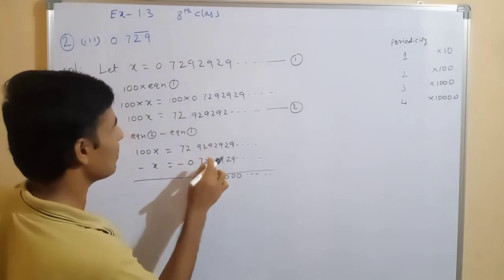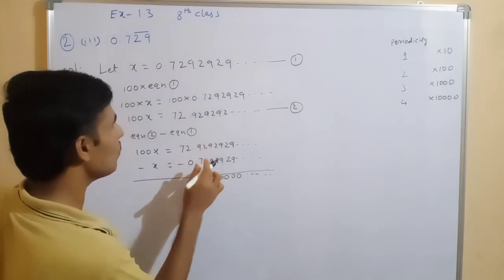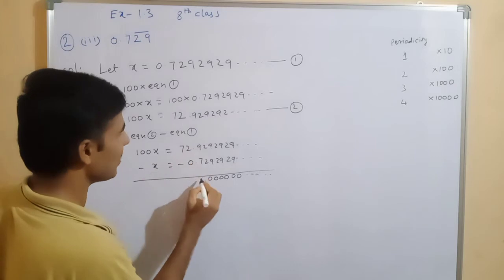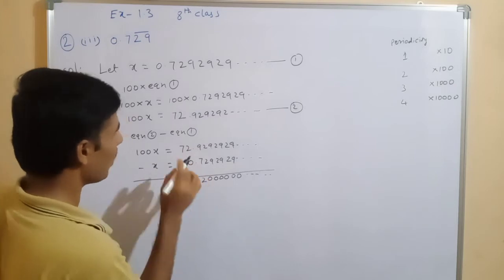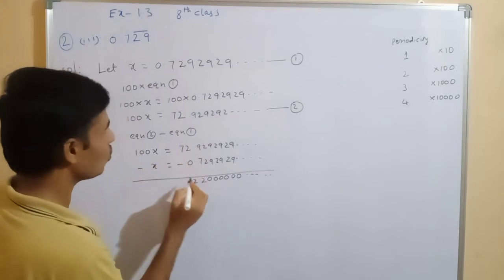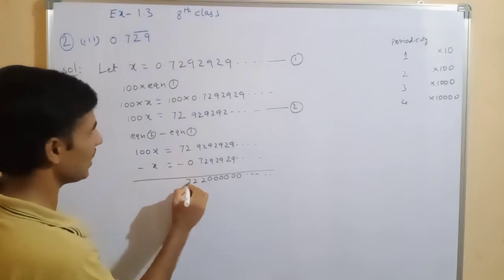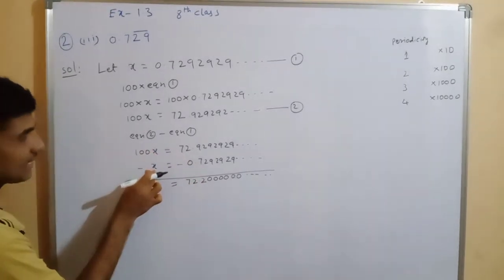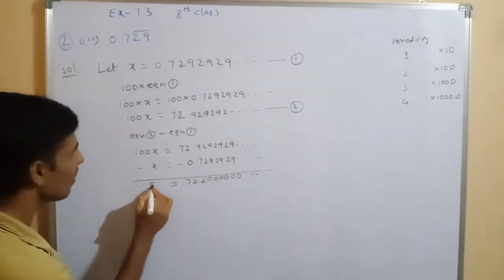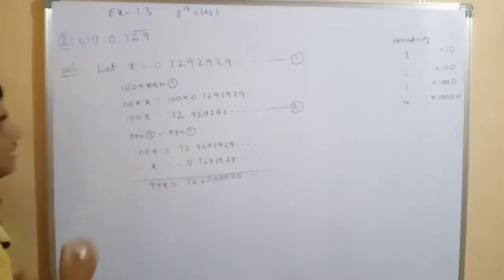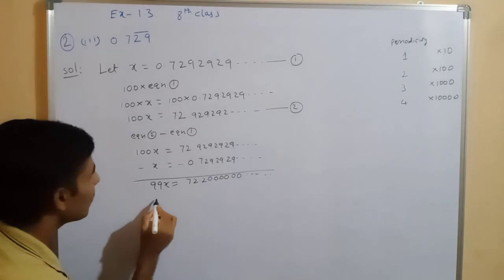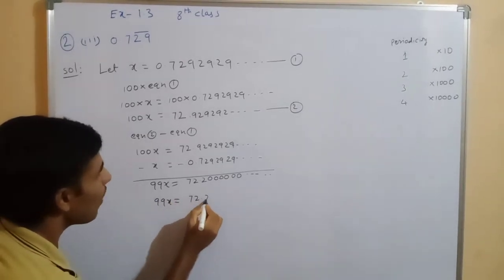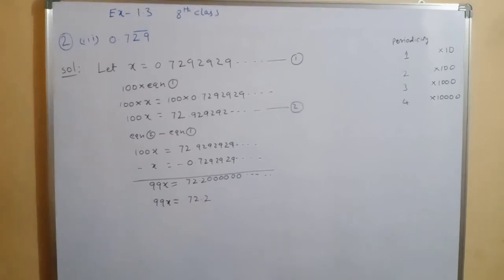Working through the subtraction: 2 minus 2 is 0, 9 minus 9 is 0, 2 minus 2 is 0, then 9 minus 7 gives 2, and 7 remains. So 100x minus x equals 99x, and 99x equals 72.2.